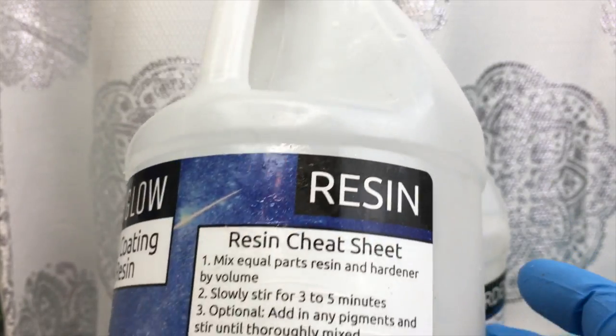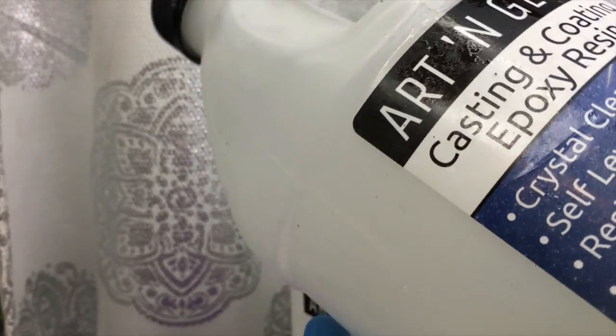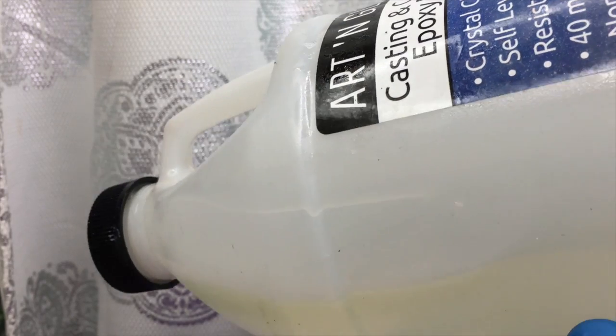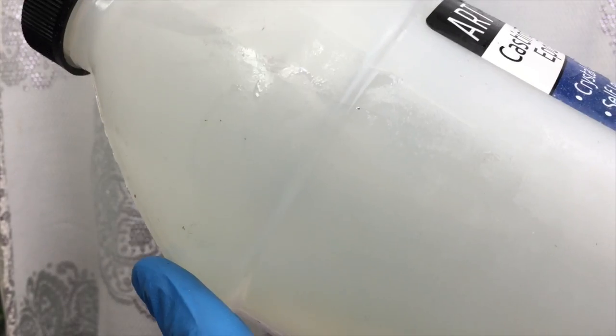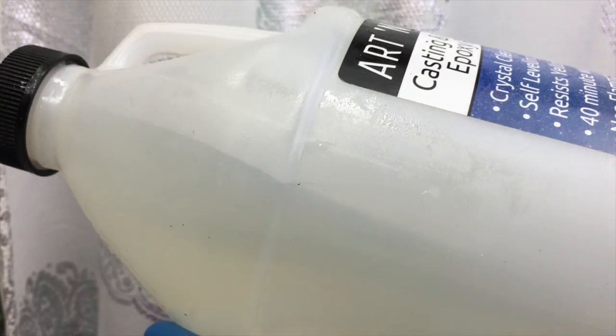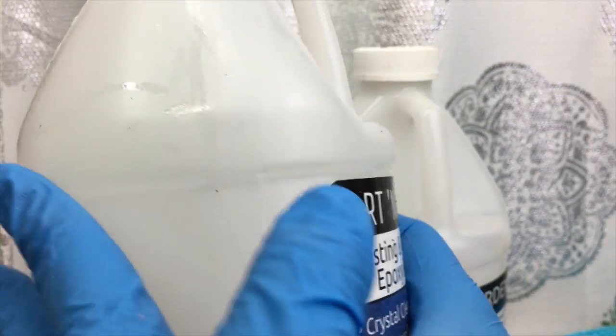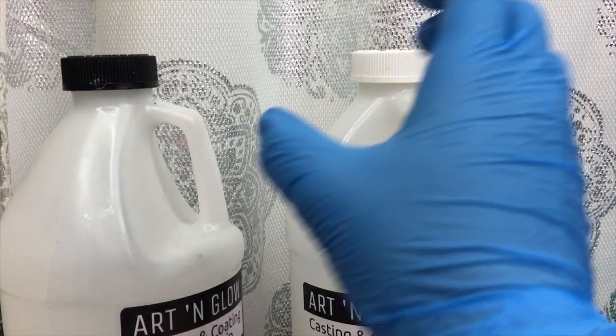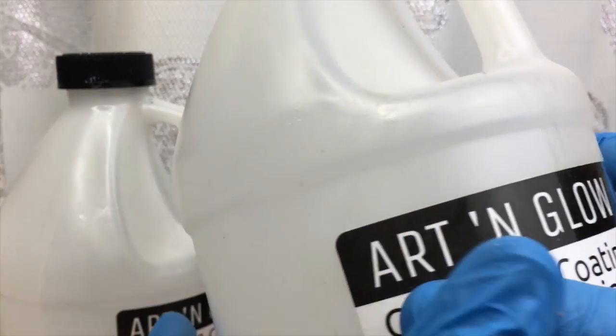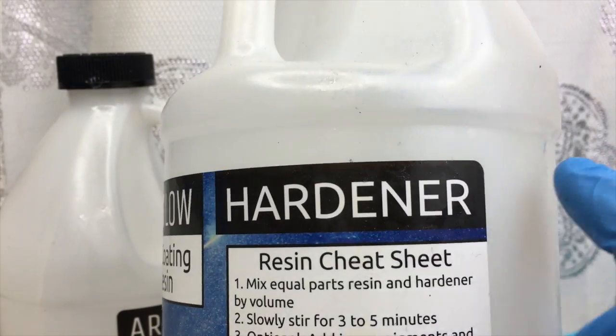Usually with one to one ratio resins they are a little bit thicker than two to one ratio resins because they have a higher viscosity so I typically like to use this resin for projects that I want more color in as opposed to the next brand that I will be showing later on.